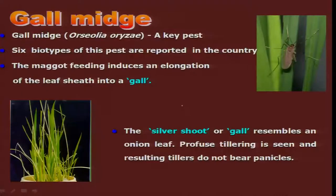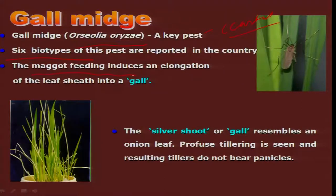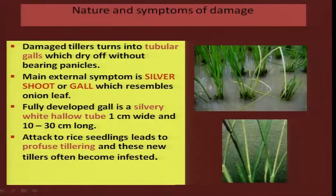The next important pest is gall midge, scientifically referred to as Orseolia oryzae, which is an important key pest particularly in the coastal region of the country. It has 6 biotypes identified so far, and the maggot is the damaging stage, which causes the elongation of a gall. This is also called a silver shoot or gall, which resembles almost an onion leaf. Such plants will not bear any panicle, as can be seen clearly — the maggot feeds inside and tillers that come out also do not bear any panicle, resulting in no ear head formation.